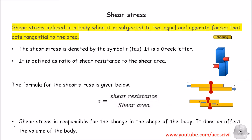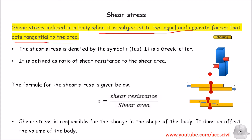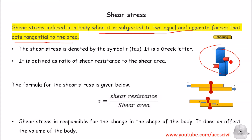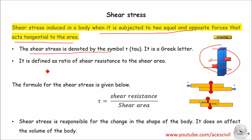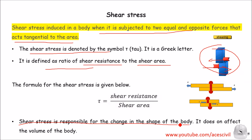Now we are going to discuss about shear stress. Shear stress is induced in the body when it is subjected to two equal and opposite forces that act tangentially to the area, as you can see in the diagram showing the change in shape when force is applied. Shear stress is denoted by tau and is defined as the ratio of shear resistance to the shear area. Shear stress is responsible for a change in the shape of the body; it does not affect the volume of the body.